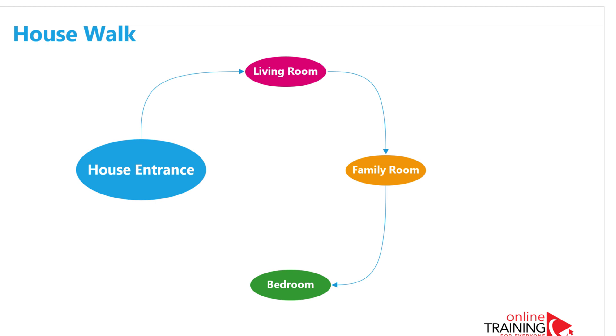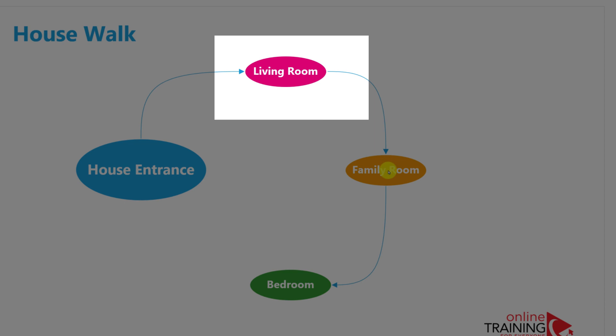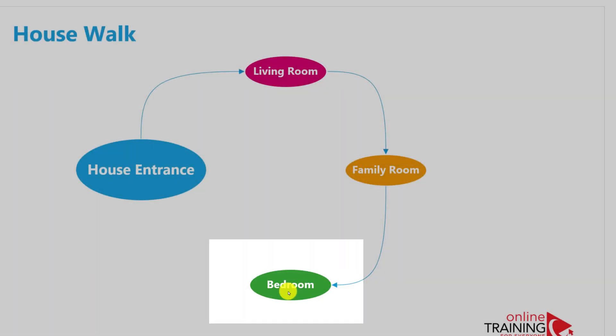Everybody lives somewhere, and wherever you live, you might have a house entrance, living room, family room, or bedroom, or some variations of those. First, you build a path of how you are going to walk through the house. You enter through the entrance, then you go to the living room, then you go to the family room, and then you go to the bedroom.